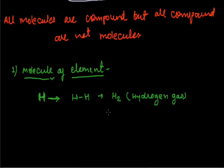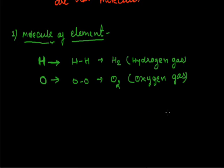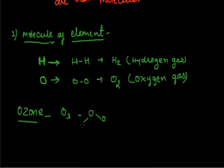The molecule of an element contains two or more similar atoms chemically bonded together. Another example is ozone, whose formula is O₃ — this is also a molecule of the oxygen element because three oxygen atoms are bonded together. For inert gases like helium, neon, argon, and krypton, they exist as single atoms, so their atomicity is 1.